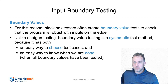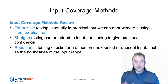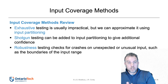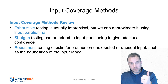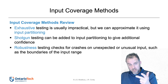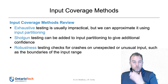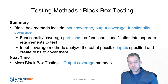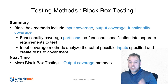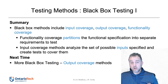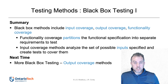That concludes today's content. In the first half I covered functionality coverage, then input coverage, which included exhaustive testing, input partitioning, shotgun testing — which is not systematic but is a black box method — and lastly robustness testing including boundary testing. Given that we've covered two of the three types of black box, on Monday we'll cover the final method, which is output coverage, concluding our black box testing discussion. The lecture notes for today and Monday are already posted on the course website.